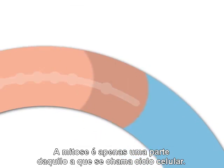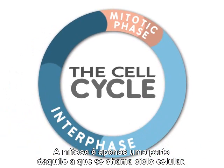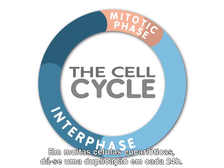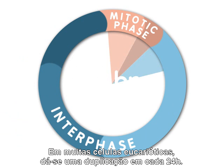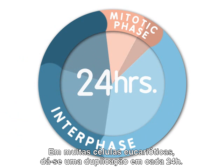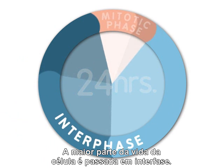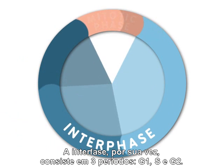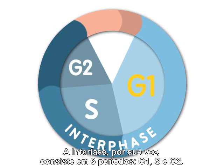Mitosis is only one part of what is called the cell cycle. For many eukaryotic cells, a cell is duplicated every 24 hours. Most of the life of a cell is spent in interphase. Interphase consists of three stages called G1, S, and G2.